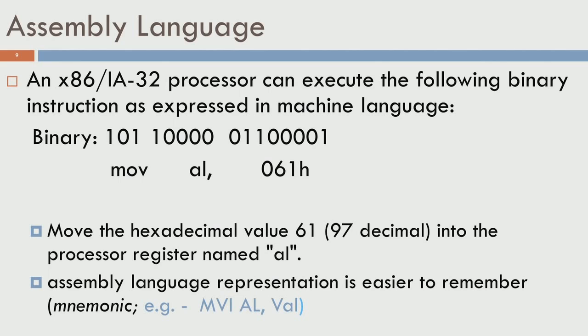AL is a register which is an internal memory inside the CPU. The meaning of this instruction is move number 61 in hexadecimal to AL, and this is something you and I may not know or understand if just given the binary bits.